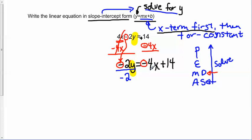On the right side, we have to be careful here. That negative 2 is going to end up dividing both of these terms. It's going to divide both the negative 4x and the positive 14. So we want to be sure that we write that negative 2 as dividing both of those pieces. The negative 2s are going to cancel out.